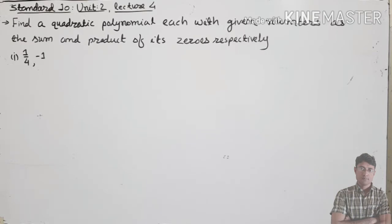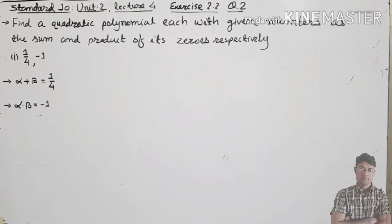We'll understand how to find the polynomial here. Exercise 2.2, Question 2 — the first sum is 1/4 and minus 1. So 1/4 is the sum of the zeros and minus 1 is the product of the zeros. So alpha plus beta equals 1/4 and alpha into beta equals minus 1.